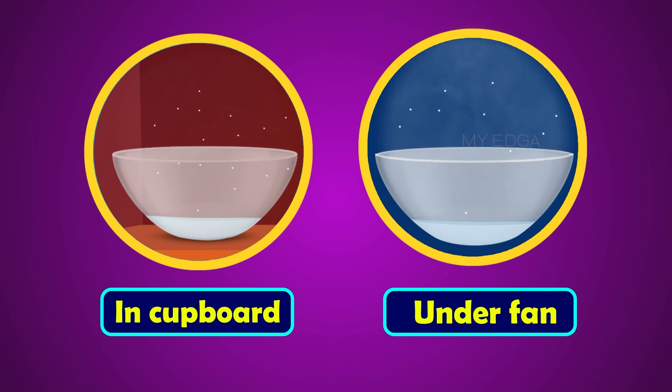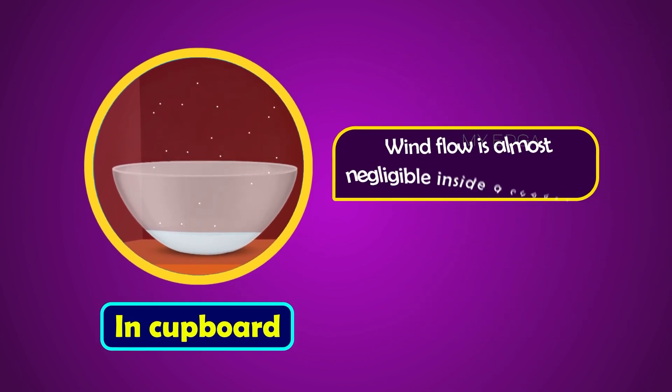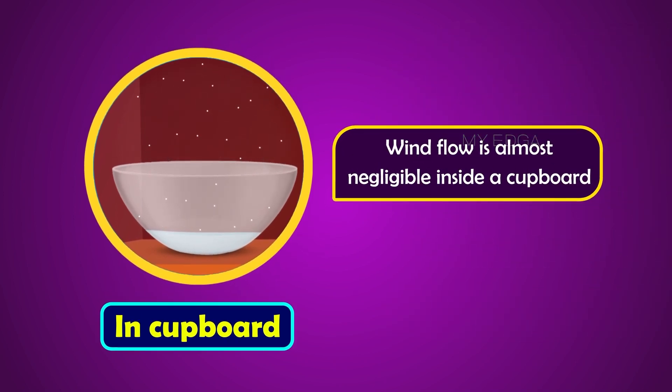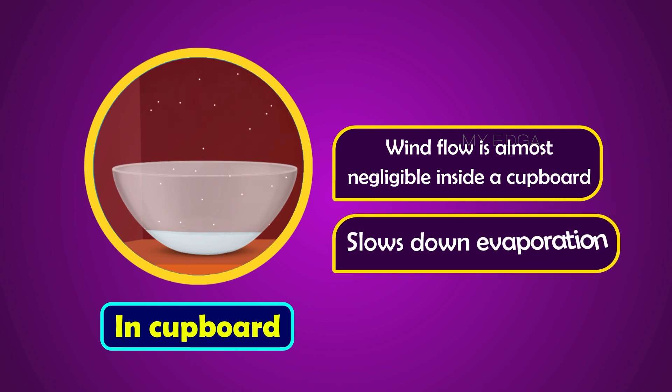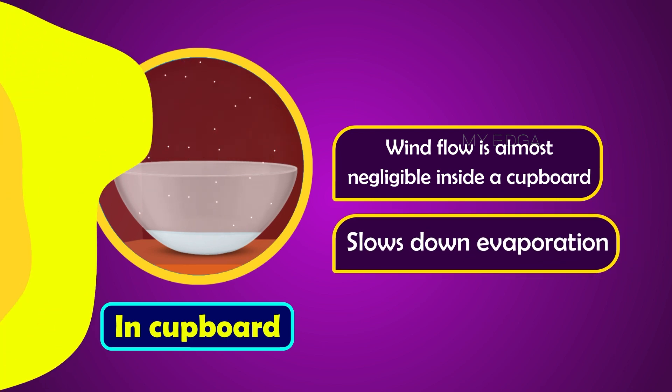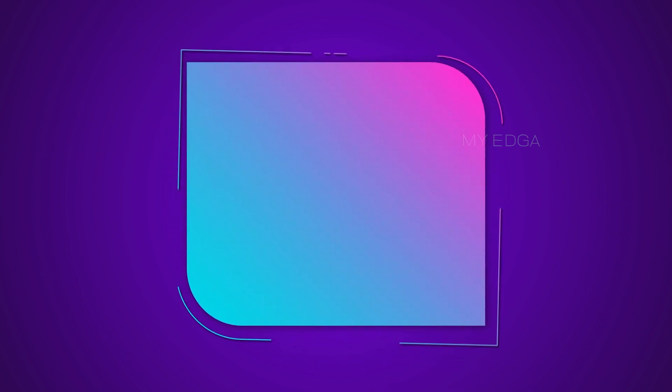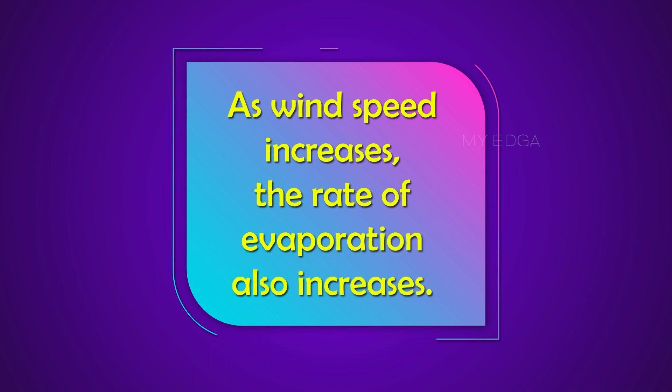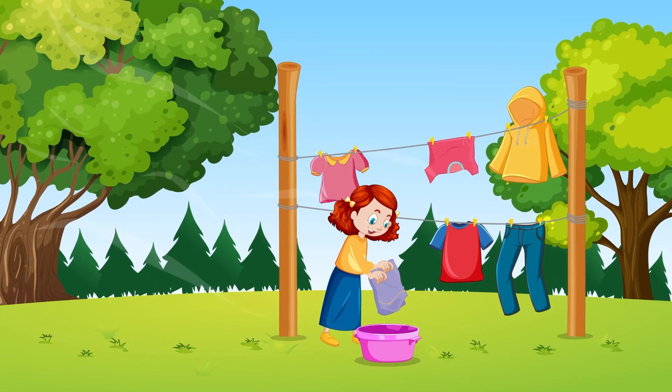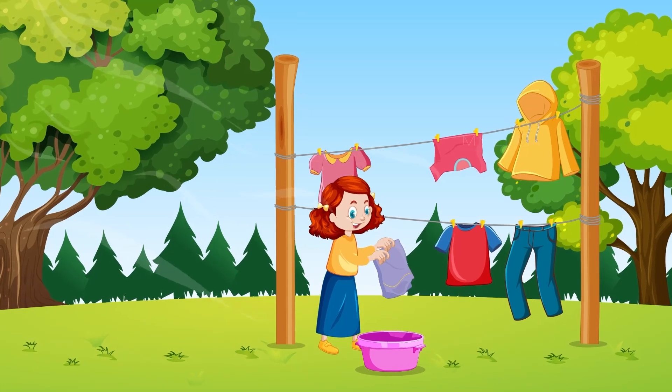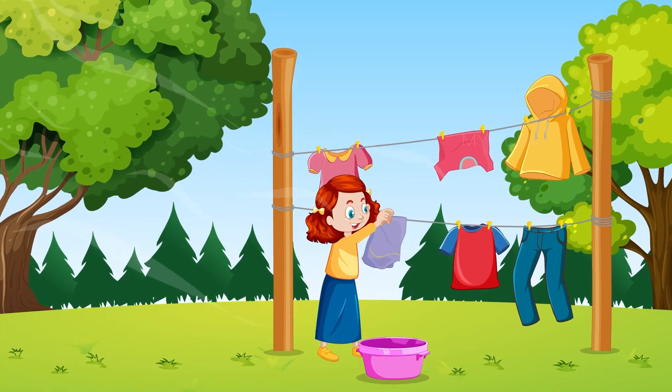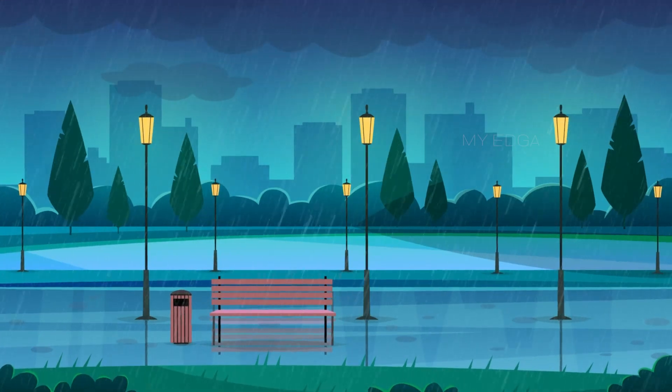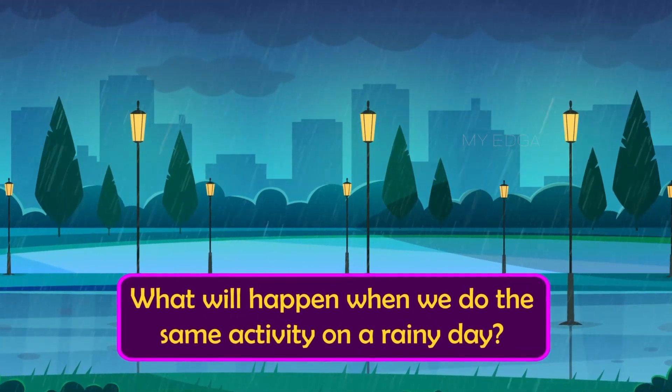But we can observe that wind flow is almost negligible inside a cupboard which slows down the process of evaporation. Therefore, we can say that as wind speed increases, the rate of evaporation also increases. This is the reason why clothes dry faster on a windy day.